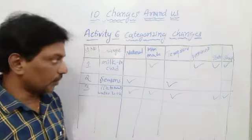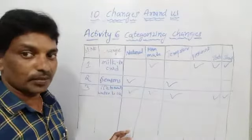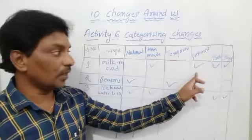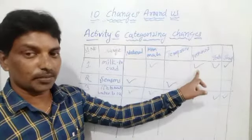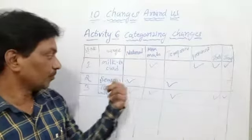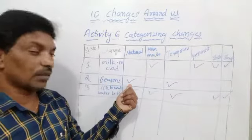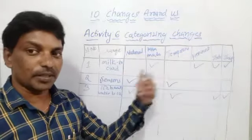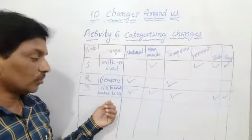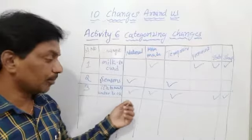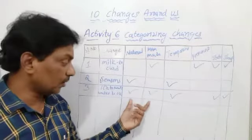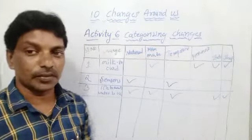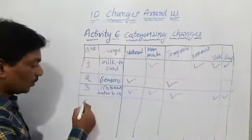Let me explain these three again. Milk to curd is man-made and permanent — shape and state change. Seasons are natural and temporary. Ice to water and water to ice occur both naturally and as man-made activities; they are temporary and both state and shape change. Now the fourth example.